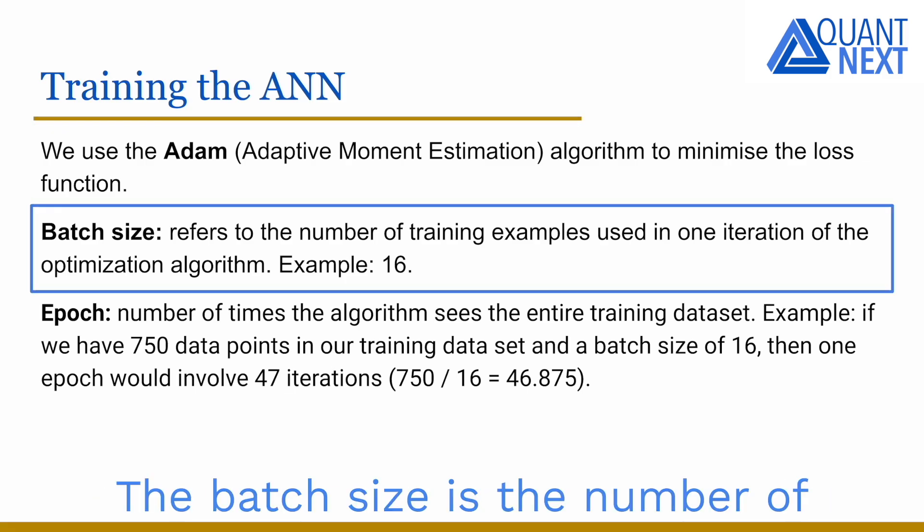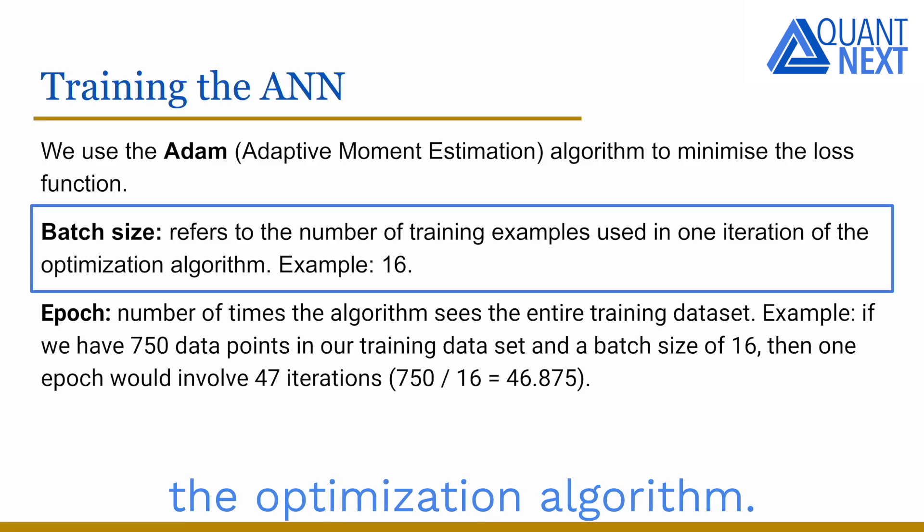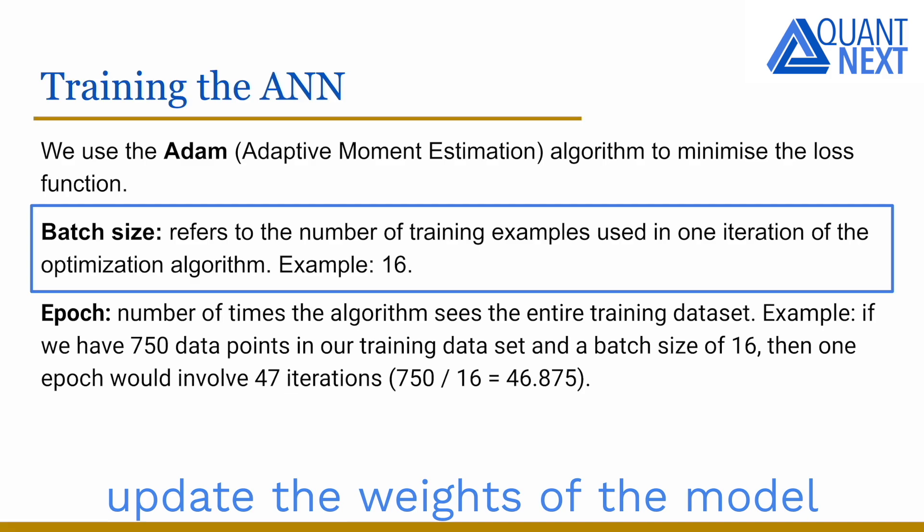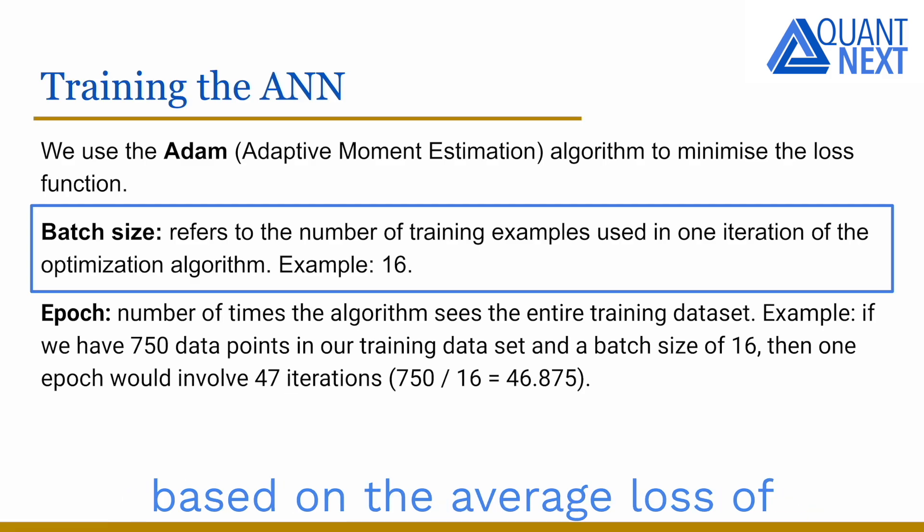The batch size is the number of training examples used in one iteration of the optimization algorithm. If the batch size is set to 16, for example, the model will take 16 data points at a time and update the weights of the model based on the average loss of those 16 samples. A large batch size leads to a more stable training process but requires more memory to process. They are in general chosen to be a power of two as CPU and GPU memory architectures are organized in powers of two and it can be faster and more efficient to do so.